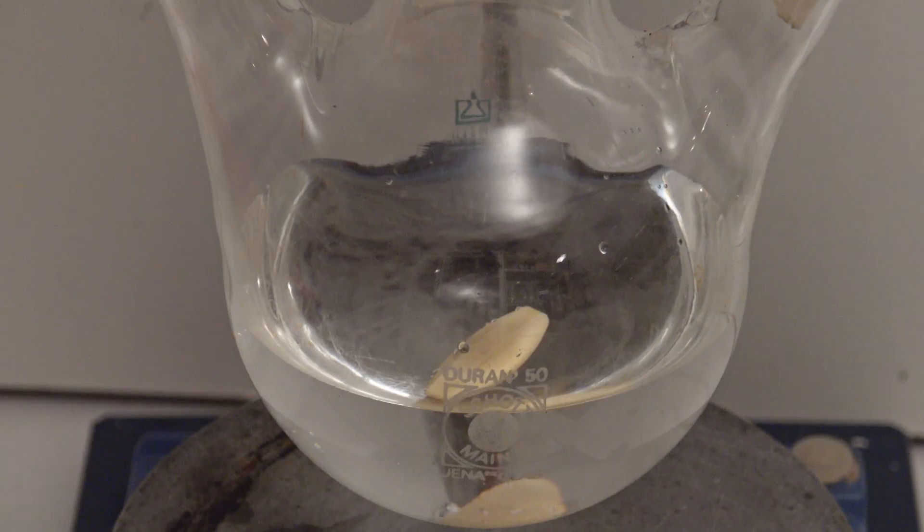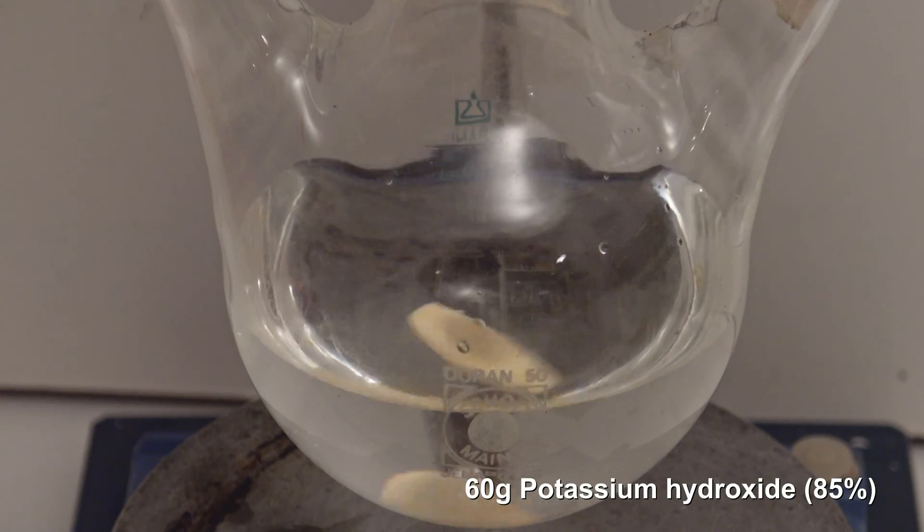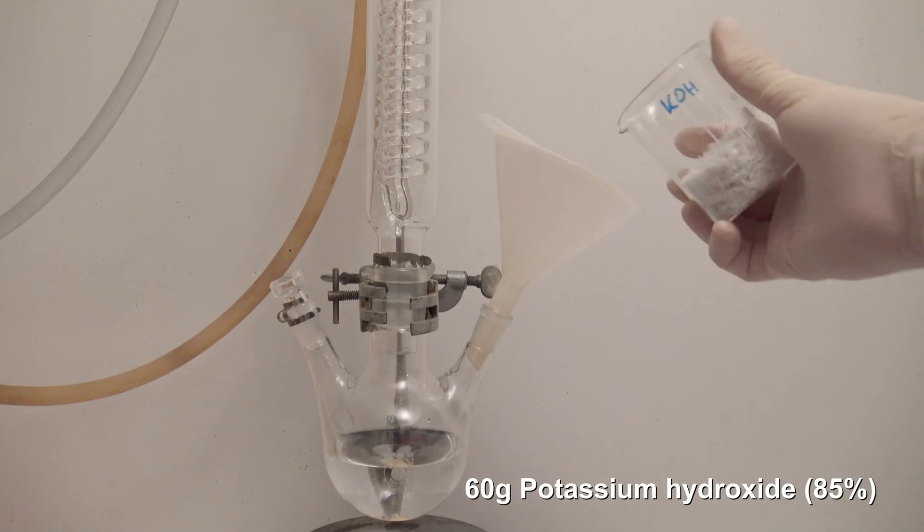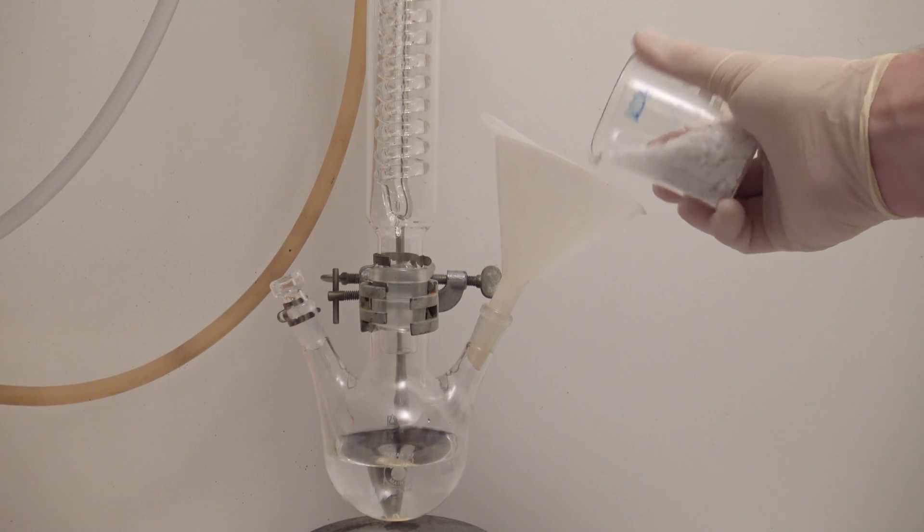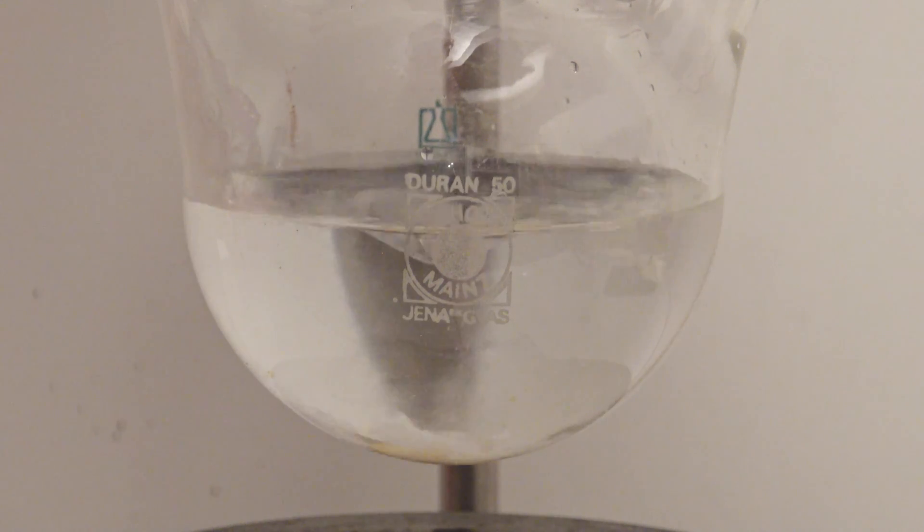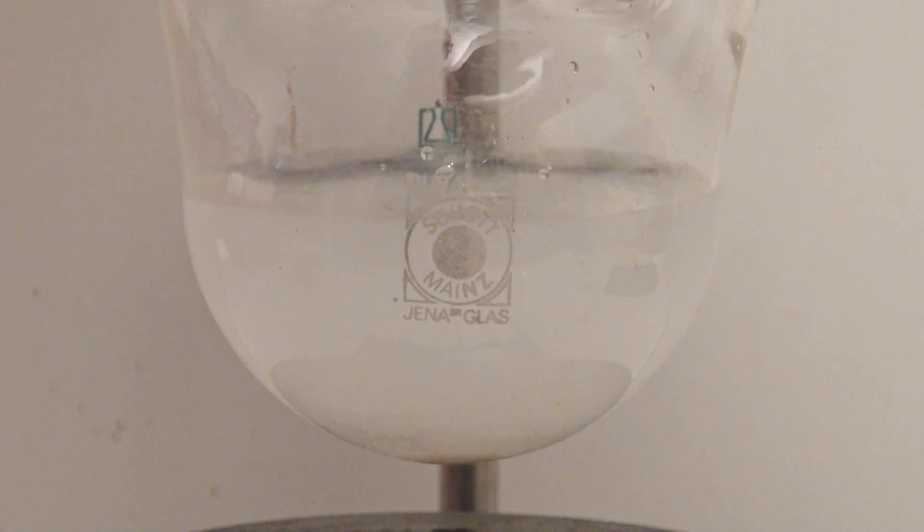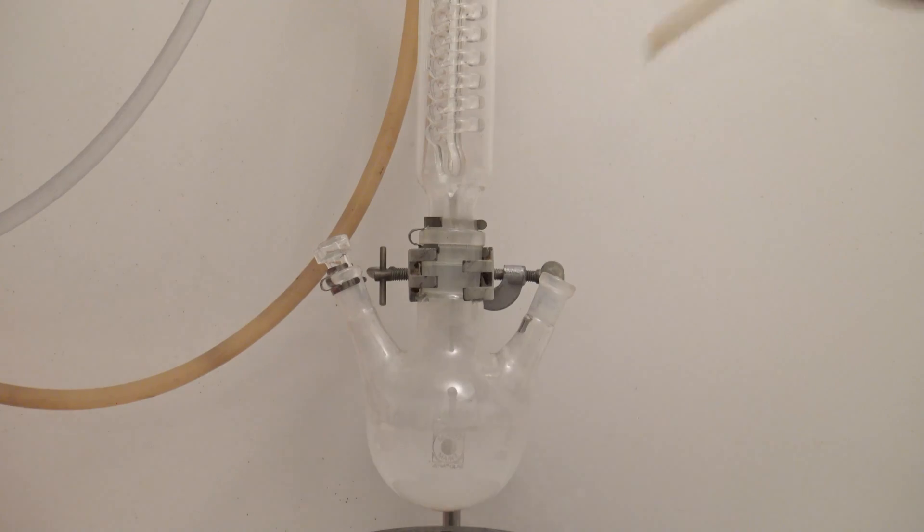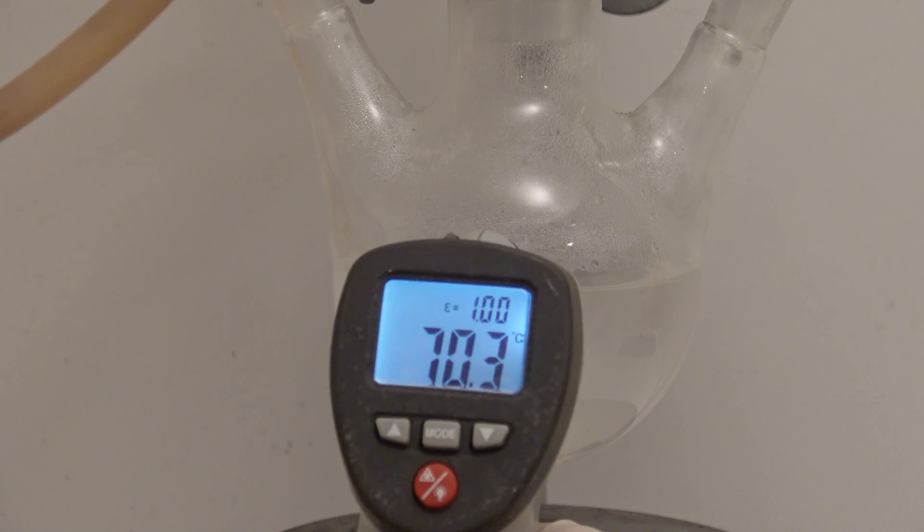Then the stirrer was turned on and 60 grams of potassium hydroxide were added. When potassium hydroxide dissolves in water, a lot of heat is released, so the water or more precisely the potassium hydroxide solution could begin to boil in the worst case. After that, the flask alone already had a temperature of 70 degrees C on the outside.